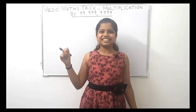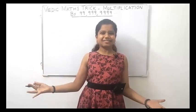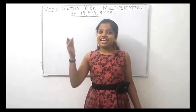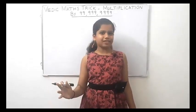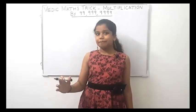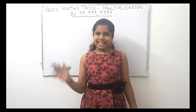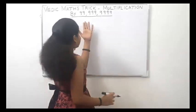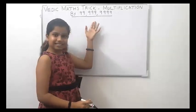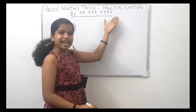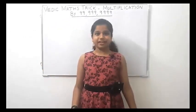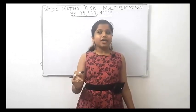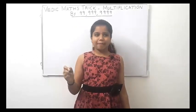Hi friends, welcome back to my channel Learn with Swamisha. In this video I am going to explain an easy method to multiply by 9, that is an easy method to multiply by 99, 999, 9999, etc. This method is used when the number of digits is less than or equal to the number of 9's.